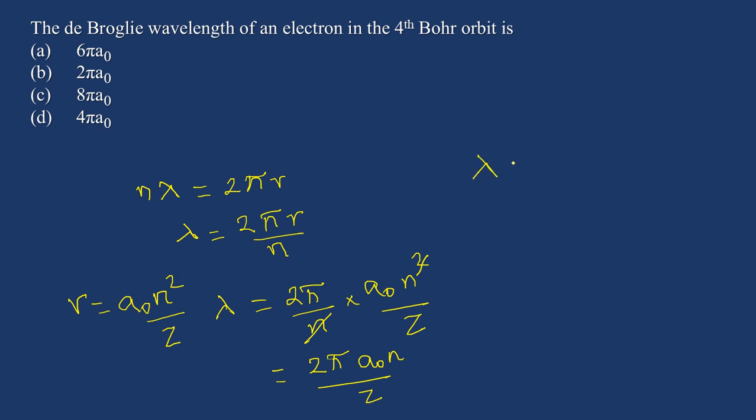So I am keeping the value of lambda equal to 2 pi a zero, and n can be fourth orbit, so 4 divided by z can be kept one for an electron. So 2 into 4 is 8 pi a zero. So the right answer is 8 pi a zero.